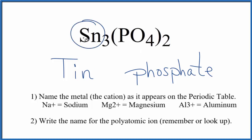But tin is a transition metal. So we have to write the charge in the name for the transition metal, because transition metals can have different charges depending on what they're bonded to.